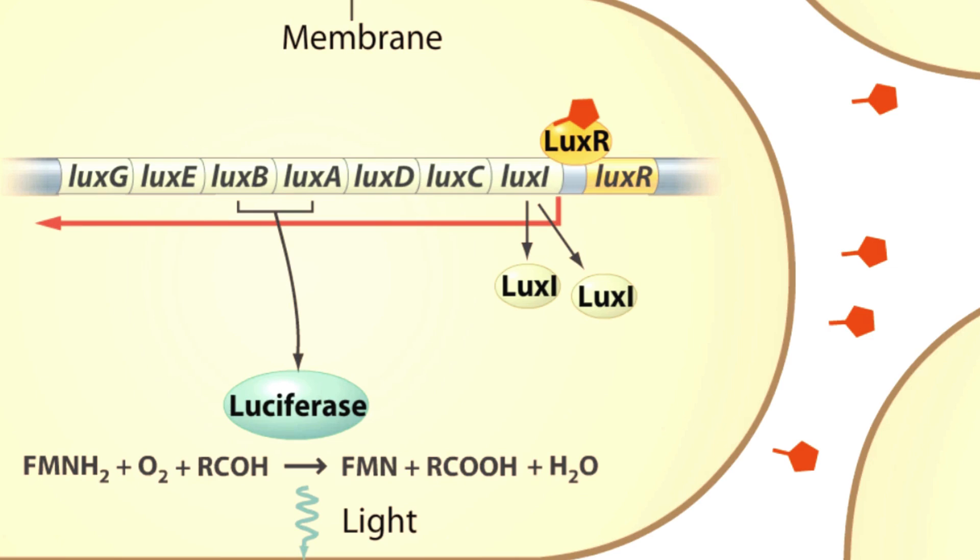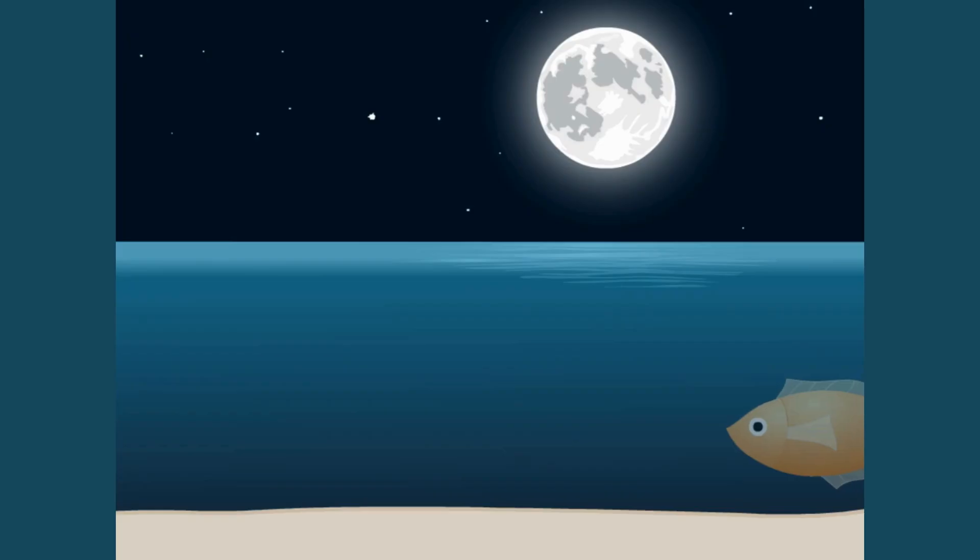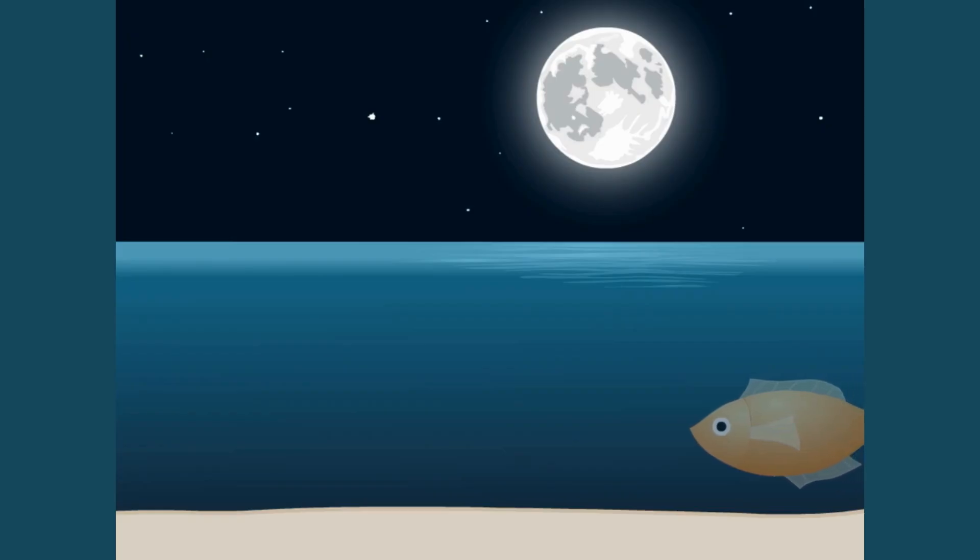How does light from Vibrio fischeri benefit the squid? The bacteria provide luminescence for the squid after sunset, when the animal emerges from its hiding place to search for food.